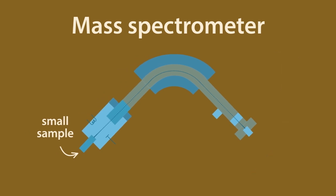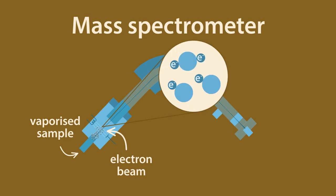A sample must first be vaporized. Once this is done, the vaporized sample is then bombarded with a beam of electrons. This beam of electrons knocks off electrons from the molecules which make up the sample, creating positively charged ions. This process is known as ionization.